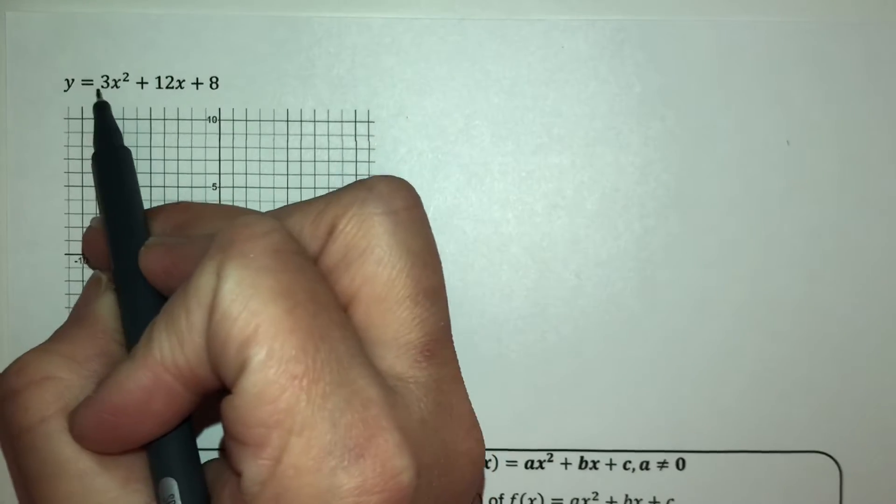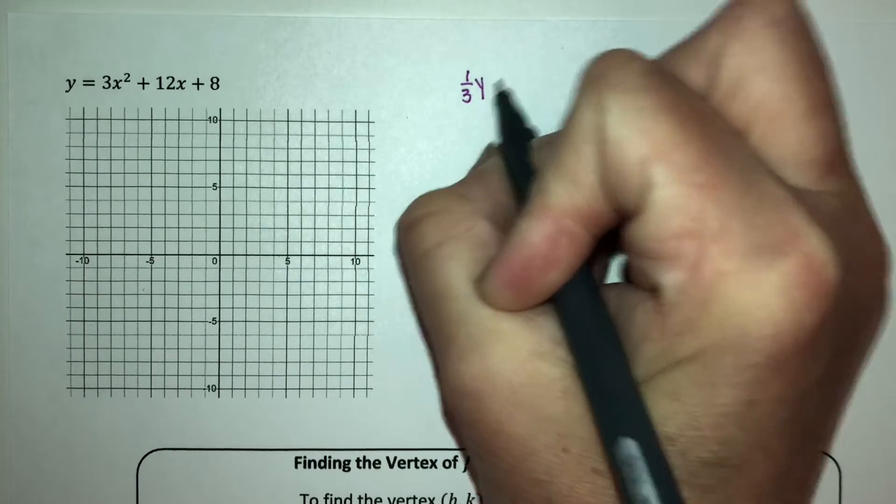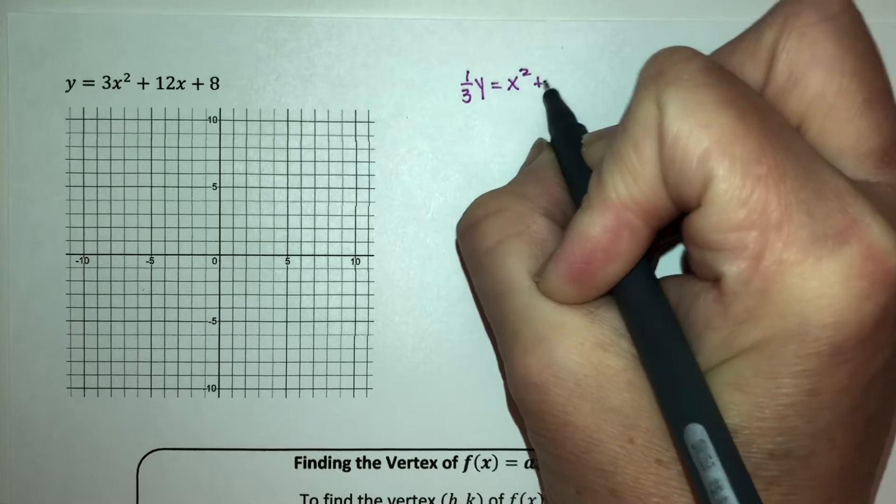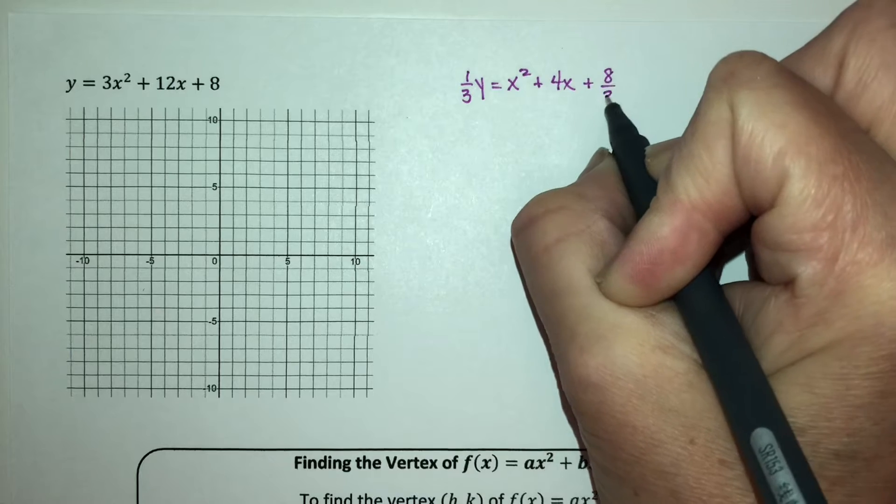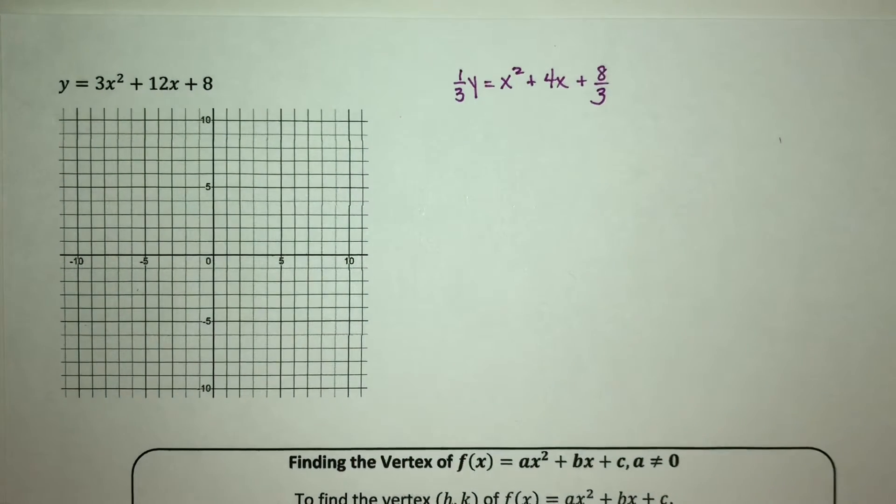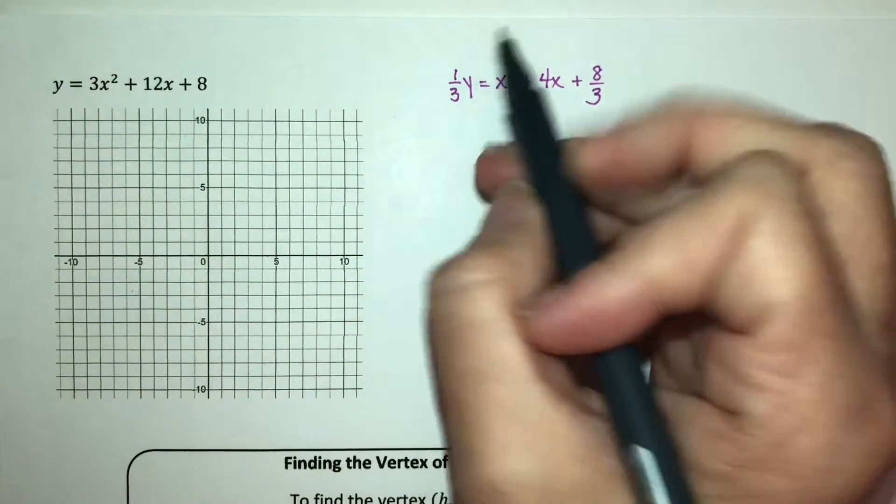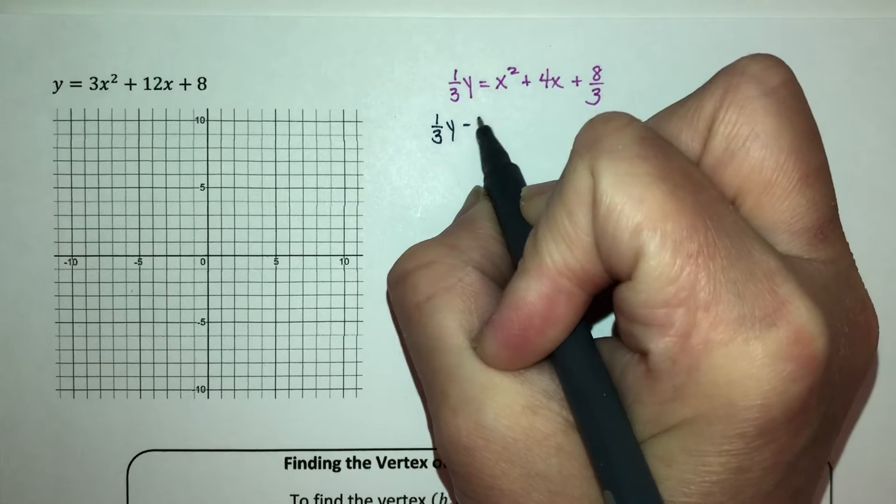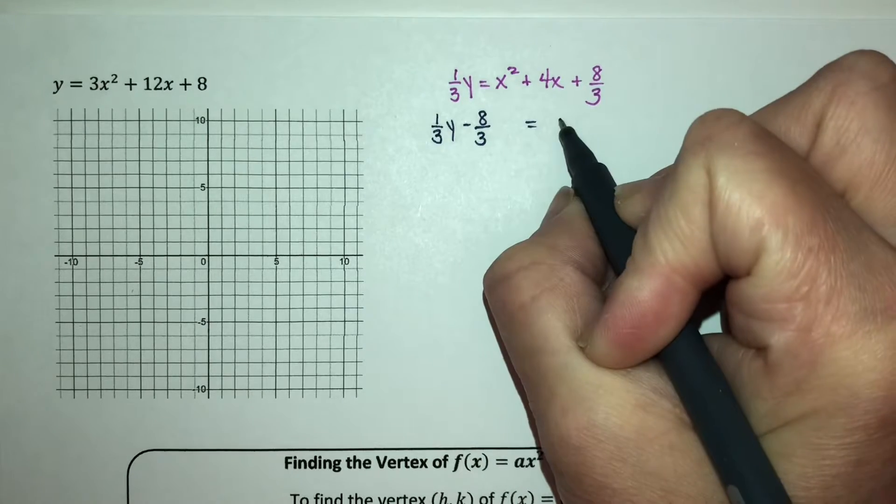So I will have 1/3 y equals x² + 4x + 8/3. Now I'm going to move the 8/3 over to the left, so minus 8/3 here, leaving myself a little bit of space.